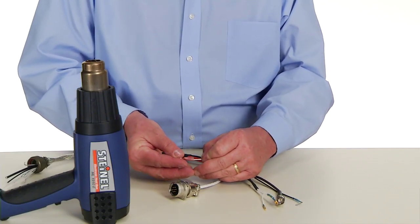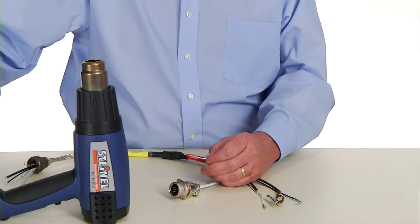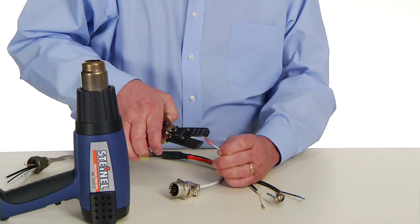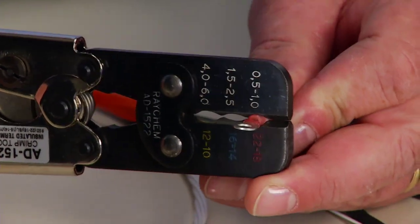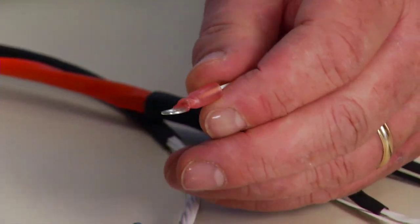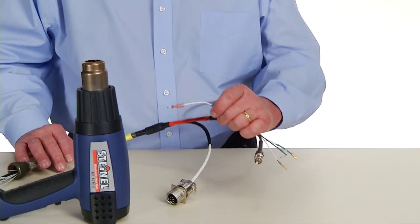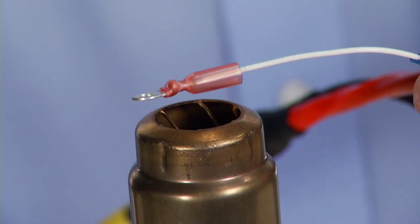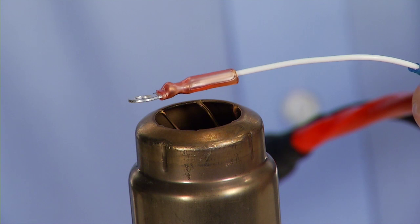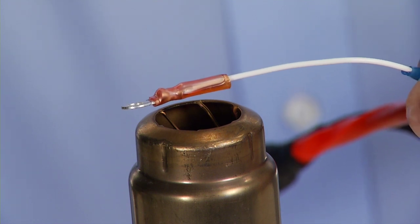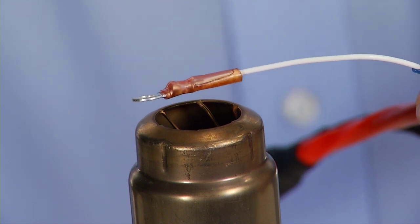Crimp the Duraceal ring terminal onto the 3-inch wire that was previously crimped to the harness assembly using the AD1522 crimp tool. Allow the assembly to cool down before handling.